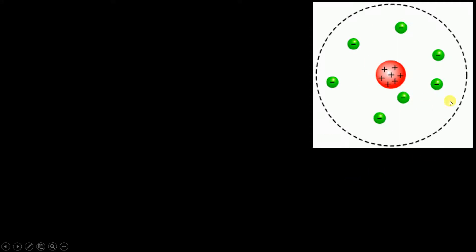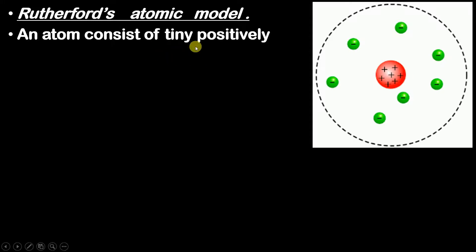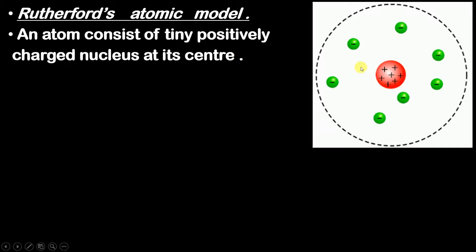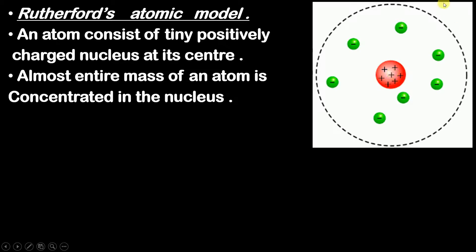On the basis of these conclusions, Rutherford proposed his model of an atom — after Thomson and Dalton, it was Rutherford who proposed this model. First point: an atom consists of a tiny positively charged nucleus at its center, with protons present in the nucleus. Second: almost the entire mass of an atom is concentrated in the nucleus, because electrons have very very small mass that can be neglected compared to the protons and neutrons in the nucleus.